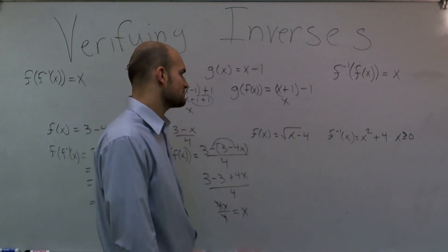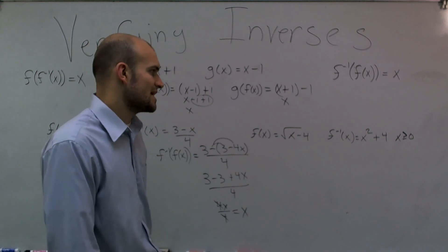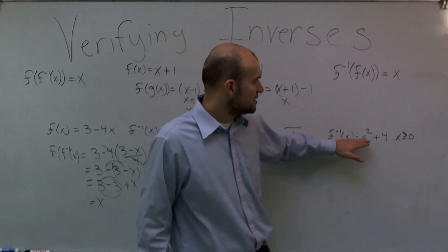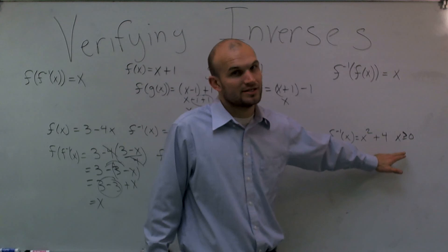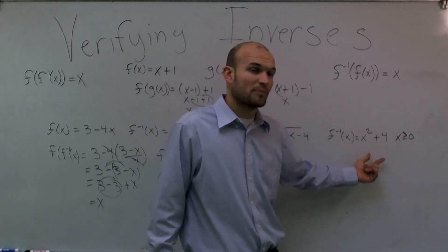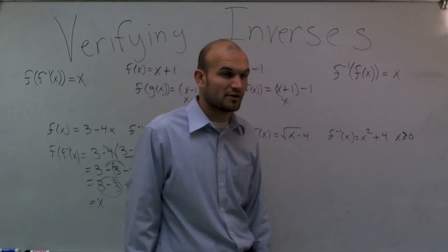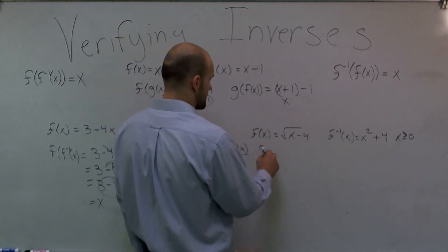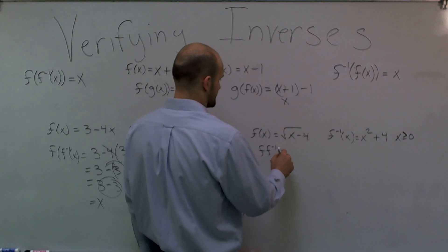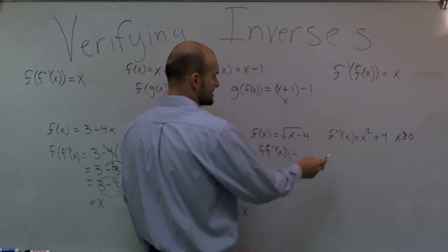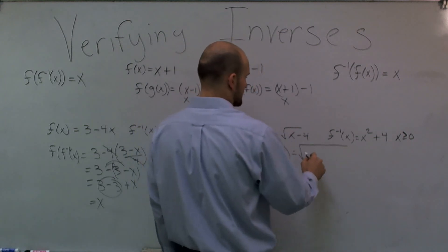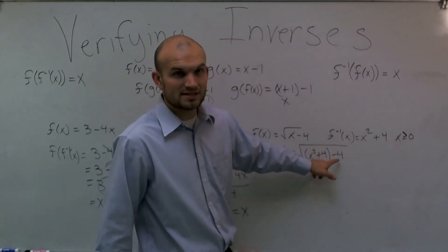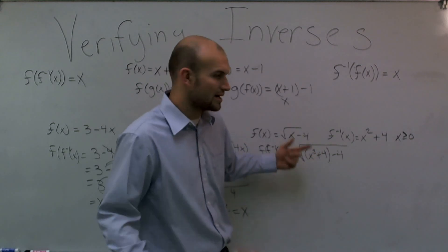Now we have f(x) = √(x − 4) and f⁻¹(x) = x² + 4 where x ≥ 0. Remember, this isn't a full parabola — the condition x ≥ 0 restricts it to only part of a parabola. To verify, I compute f(f⁻¹(x)): plug x² + 4 into f(x), giving √((x² + 4) − 4). Since 4 − 4 = 0, I have √(x²) = x.